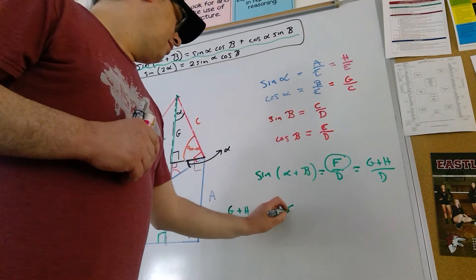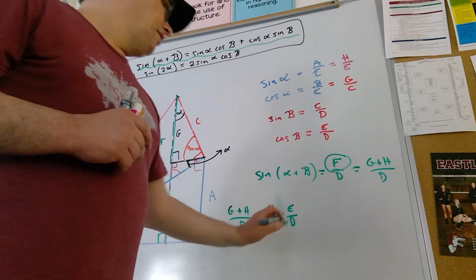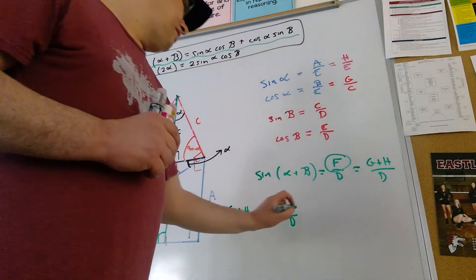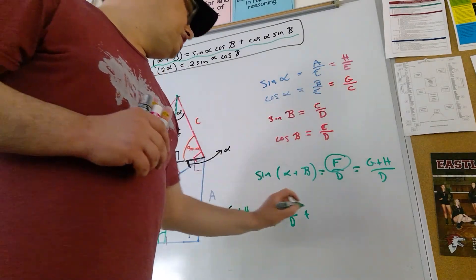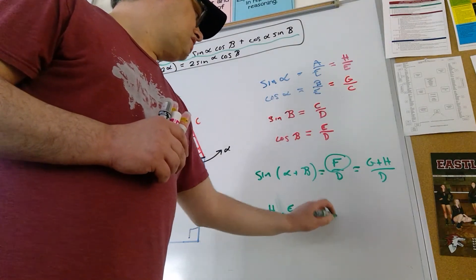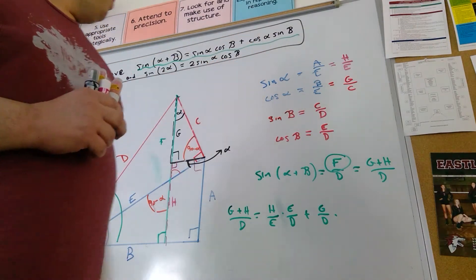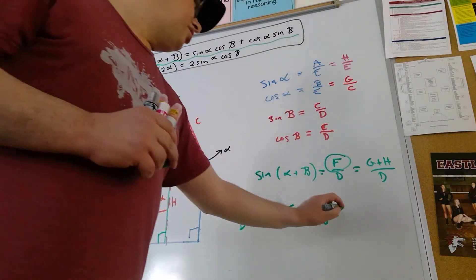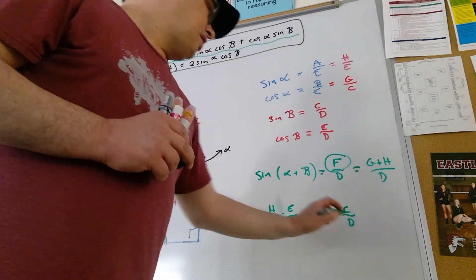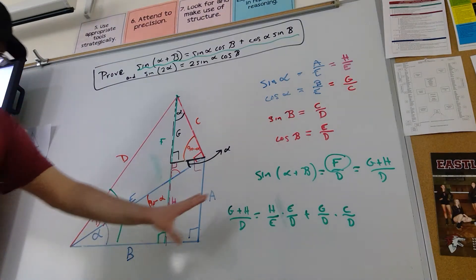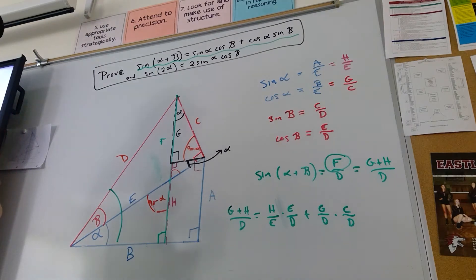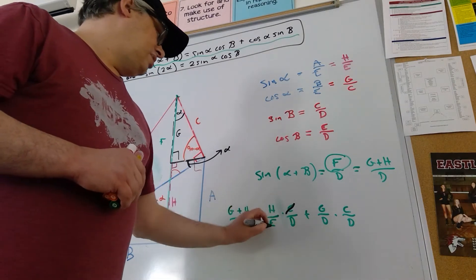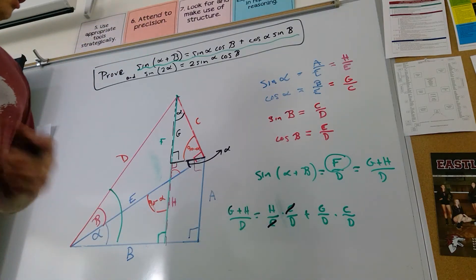Cosine of beta is E over D. Plus cosine of alpha. Cosine of alpha, G over D. Times sine of beta. Sine of beta is C over D. Now, remember, all these things are ratios here. These are ratios of sides. So if this number is the same as this number, we really can just cross out. Those are just numbers. So the E's go away.